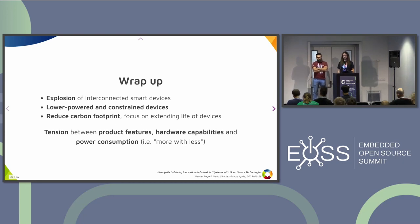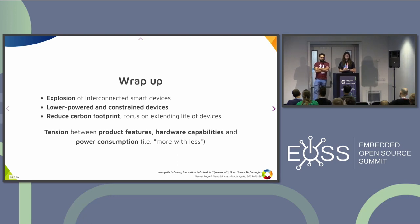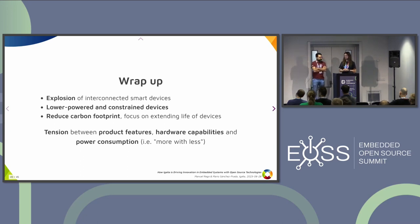Some final thoughts on how we see the situation: we see an explosion right now of interconnected devices — you can connect your voice to a light bulb, a doorbell, and this seems like it's going to keep growing. At the same time, lower-power and constrained devices are going to be a constant. Obviously they become more powerful over time, but for budget, cost, and scaling reasons, those devices will always be as constrained as possible. We are not going to be using beefy machines on our wrists anytime soon.